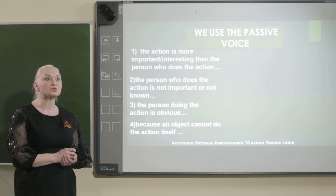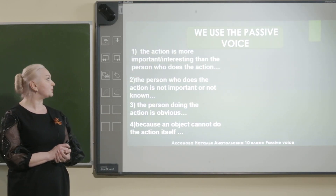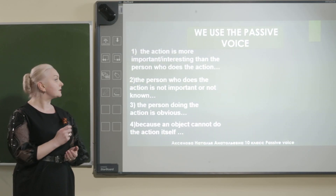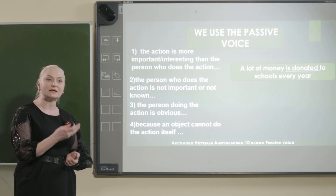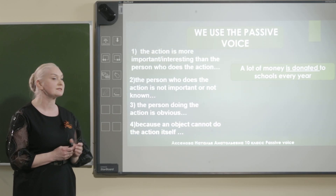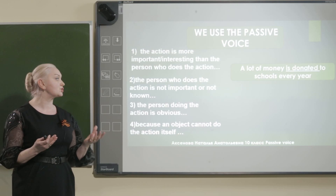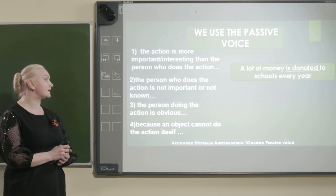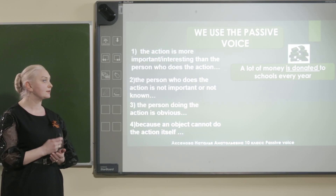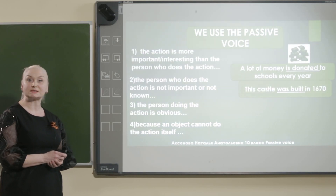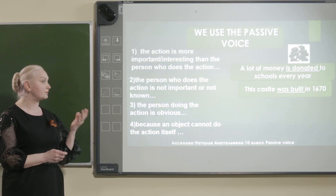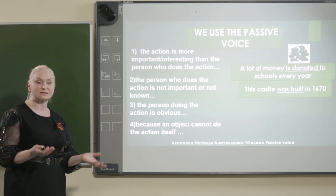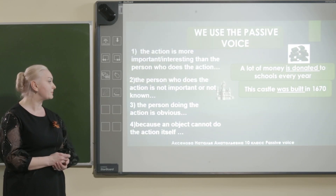Where should we use the passive voice? Passive voice should be used when the action is more interesting and it doesn't matter who did or who does the action. For example: a lot of money is donated every year — the passive voice here is 'is donated'. Also, the passive voice should be used when the person who does the action is not so important or is not necessary to know. For example: this castle was built in 1670. Замок был построен в 1670 году, и нам не важно знать, кто это сделал.